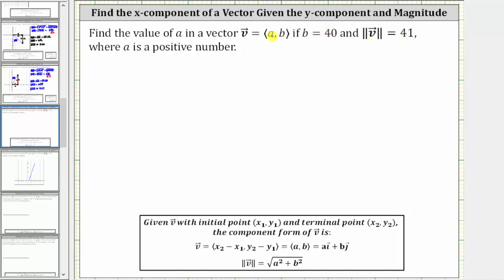So we know the y component of vector v is equal to 40. Let's write vector v in component form as a comma 40. And we know the magnitude of vector v is equal to 41.